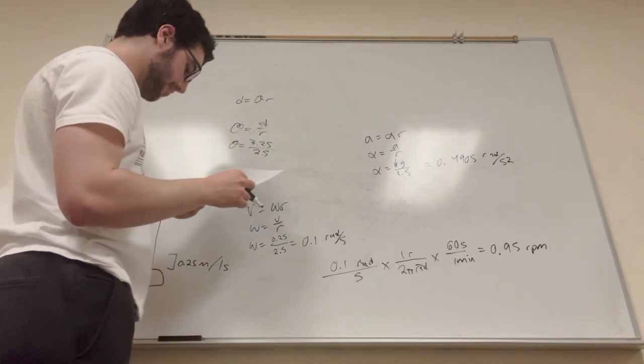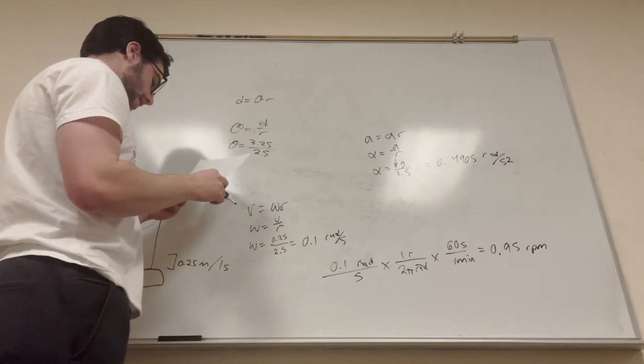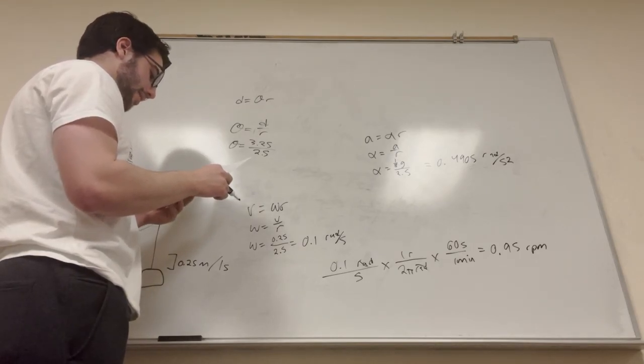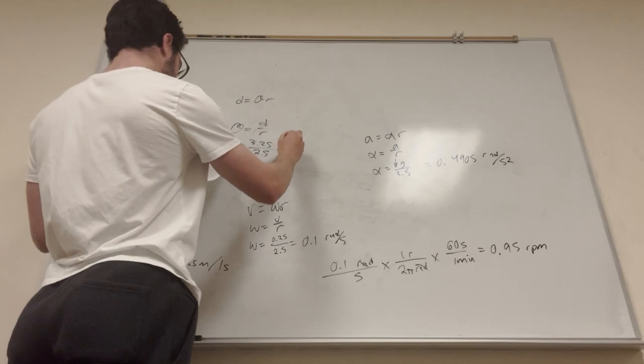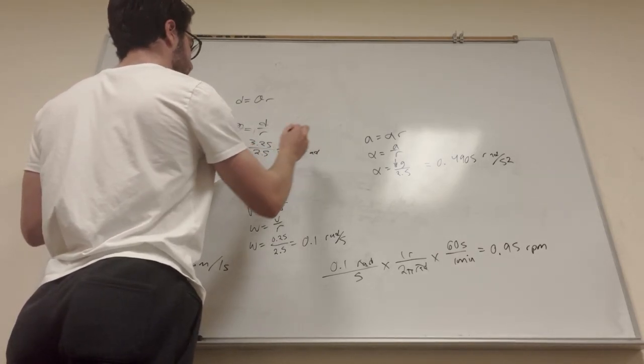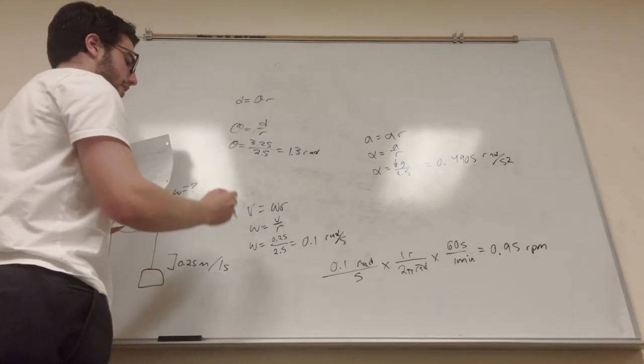Pretty sure it's even 2.5. What are we doing here? Oh, I'm looking at the wrong column. This number is 1.3 radians, is how much it changes. All right, so there's your three answers.